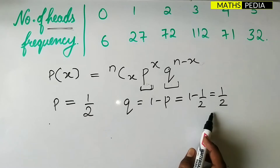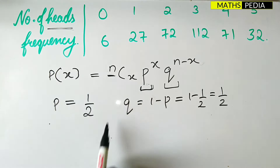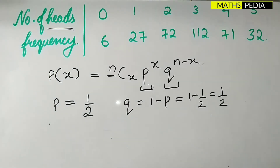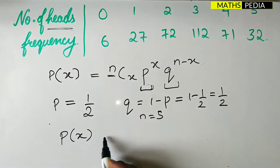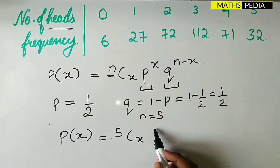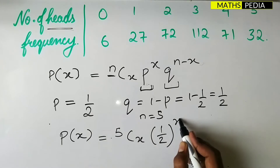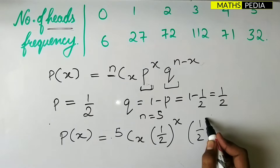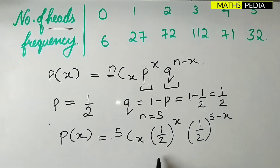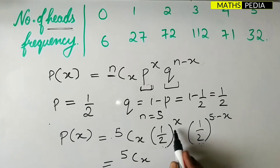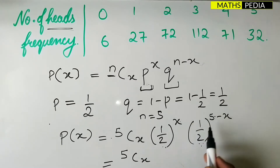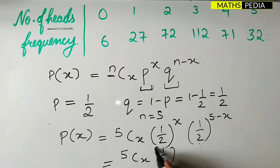Now n is equal to 5 because a set of 5 identical coins is tossed, so n = 5. Substituting all the values, P(x) = 5Cx * (1/2)^x * (1/2)^(5-x). Since the base is the same, we can add the powers: the x and -x cancel, giving us P(x) = 5Cx * (1/2)^5. This is our equation for P(x).